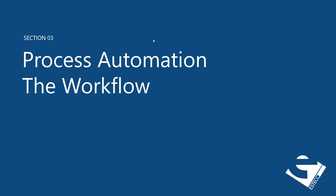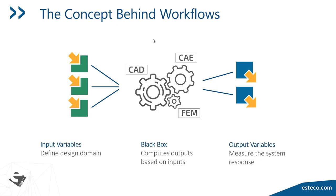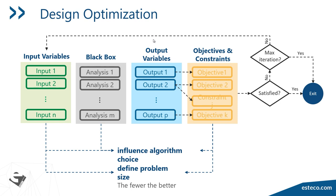How do we perform optimization? The concept is workflow-based in Mode Frontier. We start by defining input variables — the parameters the optimization will tune to get an improved design. Output variables are the responses of the system — a way to measure how you're performing against requirements. These inputs are fed into what we call a black box, which can be any type of solver: CAD, CAE, finite element. They can even be hooked up to a test cell or test bench, so the black box could be hardware as well.